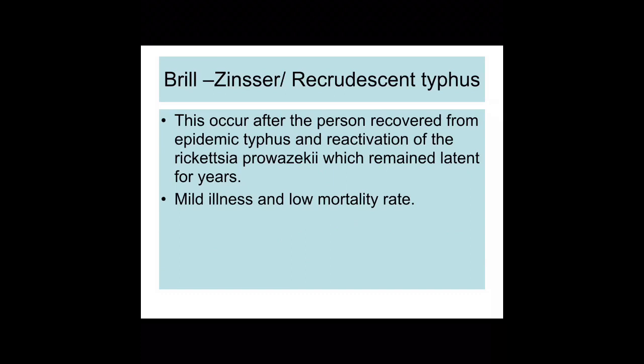The patient may also have loss of consciousness. Brill-Zinsser disease, also known as recrudescence typhus, occurs after a person has recovered from epidemic typhus and there is a reactivation of Rickettsia prowazekii, which remained latent for years. This may cause mild illness and a low mortality rate. Basically, a patient may have suffered the infection in their 20s and Brill-Zinsser may occur when they are in their 60s.